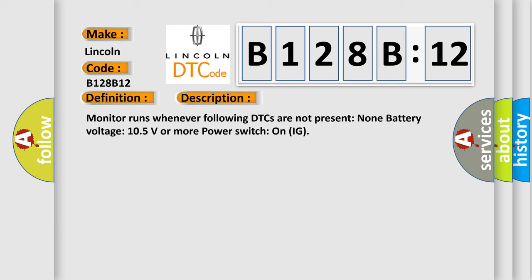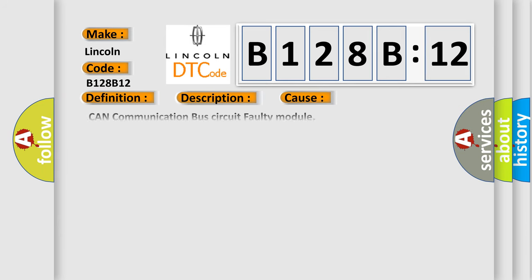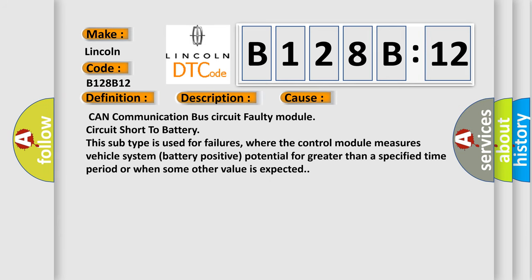This diagnostic error occurs most often in these cases: CAN communication bus circuit faulty module circuit short to battery. This subtype is used for failures where the control module measures vehicle system battery positive potential for greater than a specified time period or when some other value is expected.